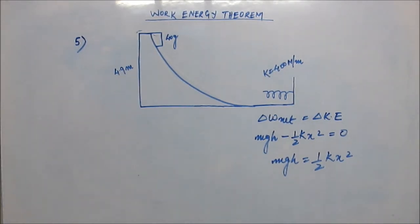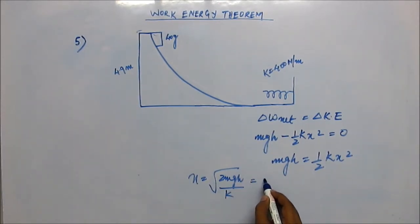All you have to do is find x. X will be equal to root over 2mgh by k. You just put the values and you'll get x as 9.8 centimeters.